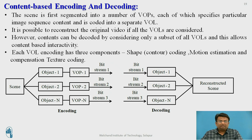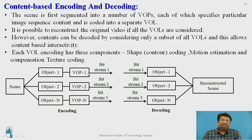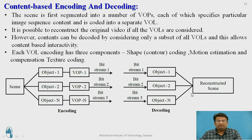Content-based encoding and decoding works as follows: first, the scene is divided into different objects; from each object, the VOPs are identified, then encoded and transmitted over the network. At the decoding side, each bitstream is converted back into objects, and these objects are combined to reconstruct the scene.